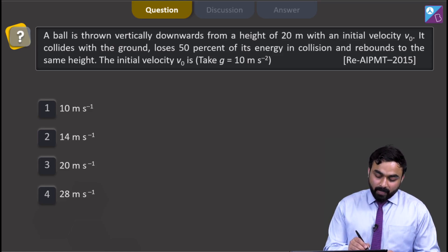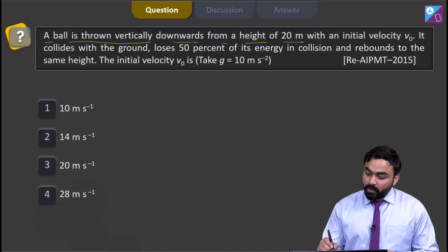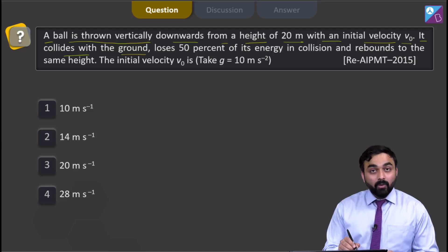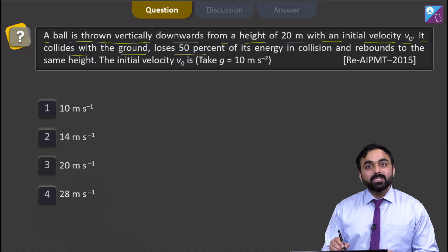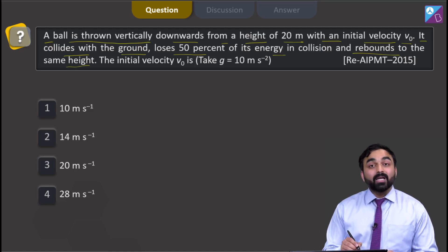In this particular question, a ball is thrown vertically downwards from a height of 20 meter with an initial velocity v0. It collides with the ground, loses 50% of its energy in collision and rebounds to the same height.